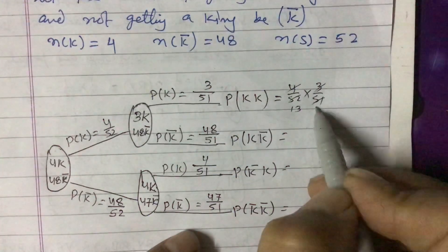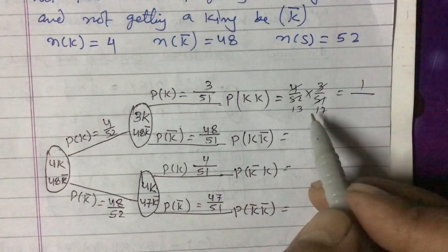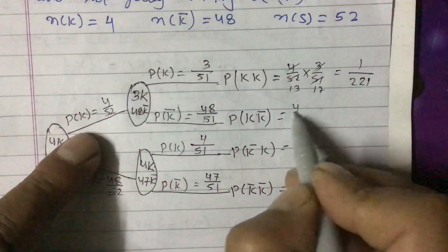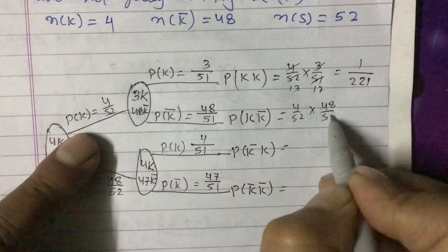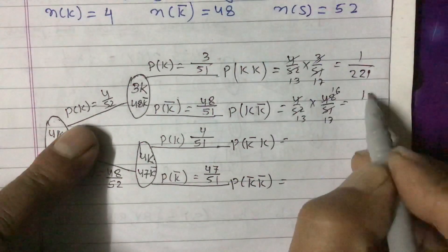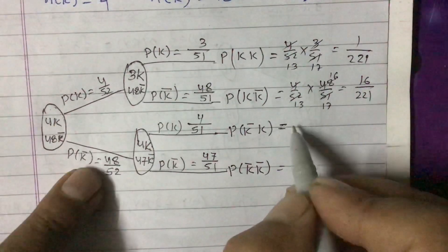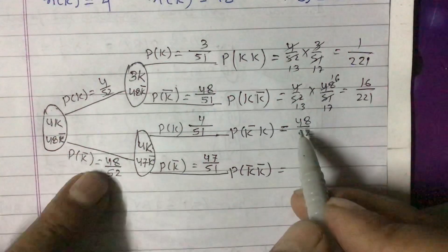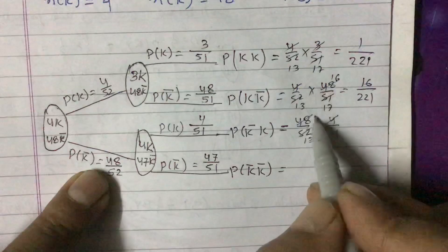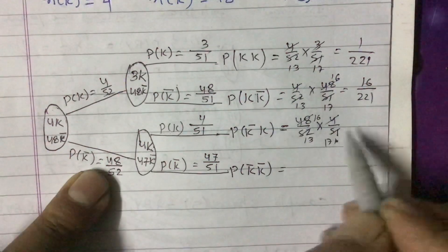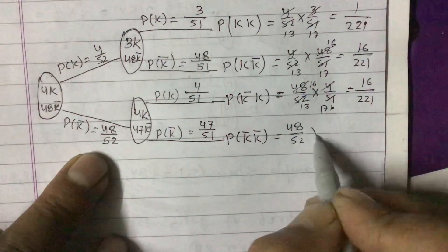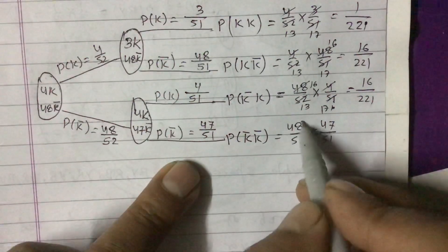Now calculating the combined probabilities: P(KK) = 4/52 × 3/51. Since 4 × 13 = 52 and 3 × 17 = 51, this simplifies to 1/221. P(KK-complement) = 4/52 × 48/51. Cancelling factors: 4 × 13 = 52 and simplifying, we get 16/221. P(K-complementK) = 48/52 × 4/51. Similarly cancelling, we again get 16/221.